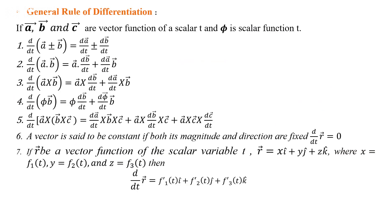The general rules of differentiation for vectors: if a, b, c are vector functions of a scalar t and φ is a scalar function of t, then for the addition or subtraction of two vectors, we simply differentiate each vector separately, giving d/dt(a ± b) = da/dt ± db/dt.